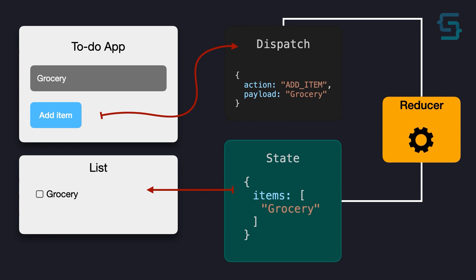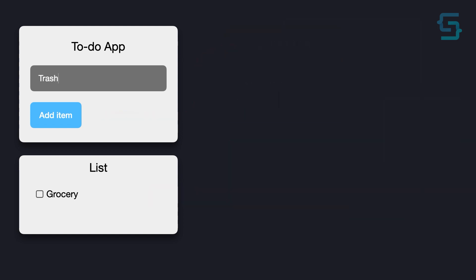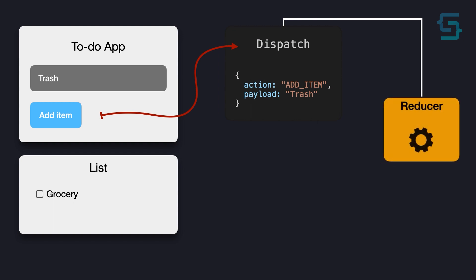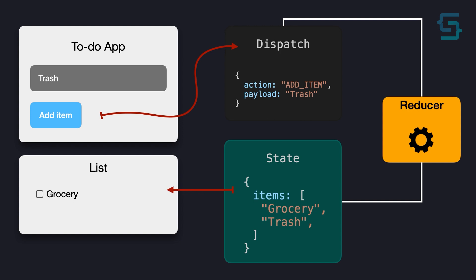Now let's say that we want to add an additional item inside of our to-do list. Again you would type in the item, you would click on Add. This would also dispatch an action, but this time the payload is different. And as the reducer is keeping track of our current state, it just adds this new item to our items list array. And now let's see how we can implement this in code.